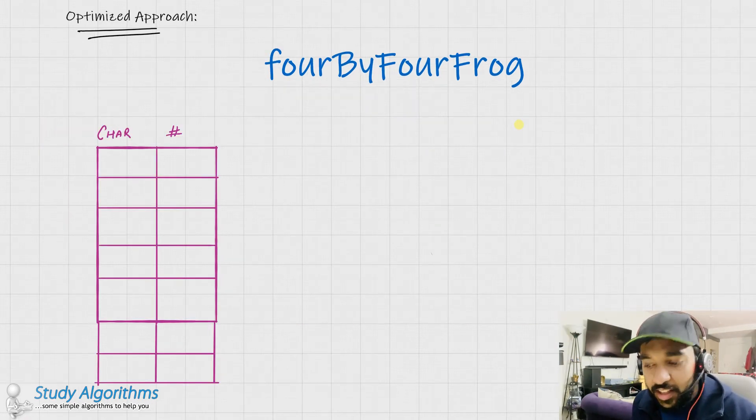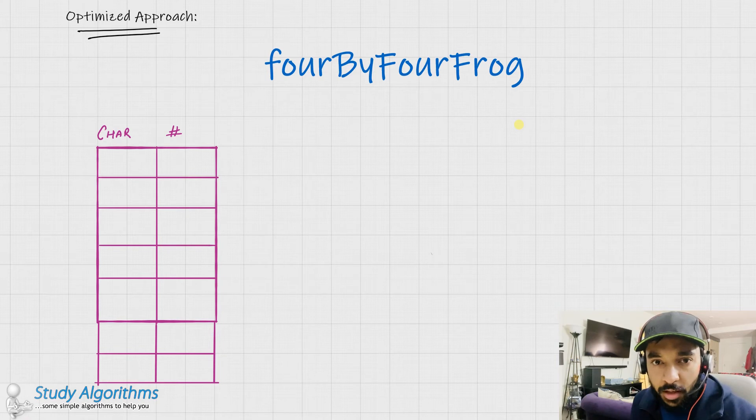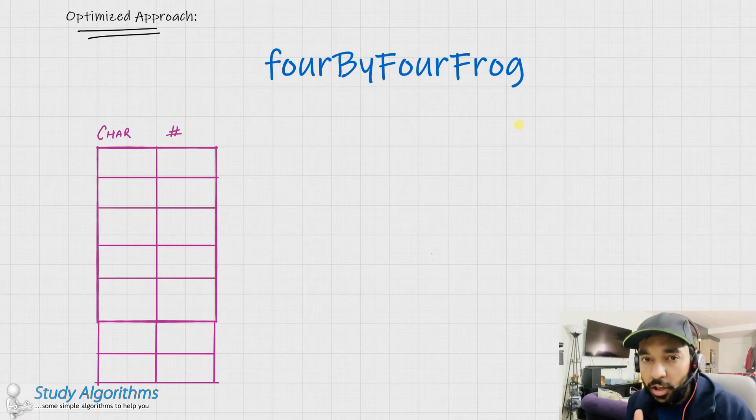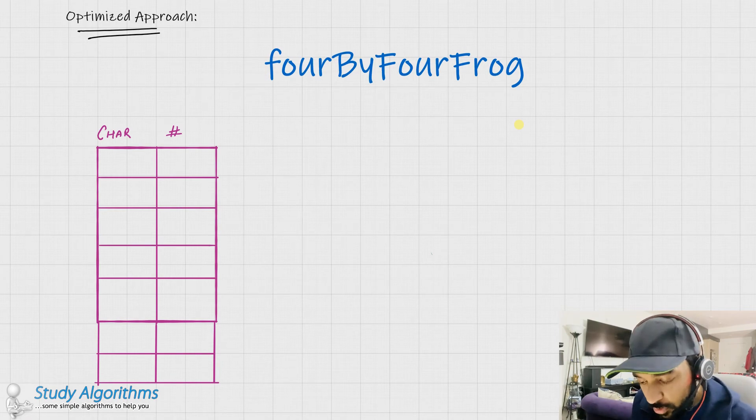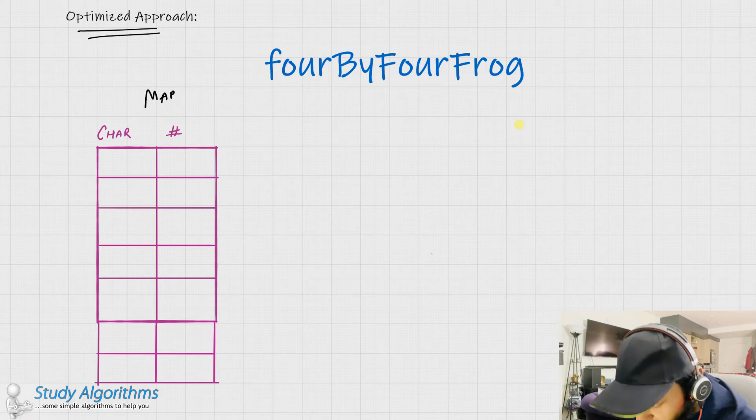You might have noticed that in our previous approach, we were wasting time just by iterating over the string again and again. Why not we do some kind of a pre-processing and maintain some kind of a data structure so that we can store the results and use them later on. So for an optimized approach, I am creating a map that is a character frequency map. And this map would be storing the character and its frequency as you find it.